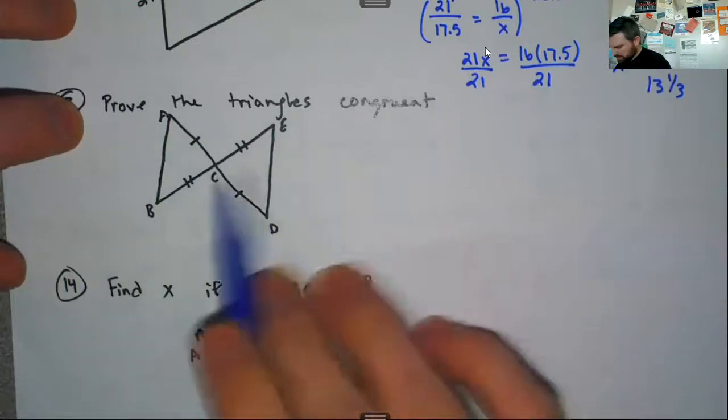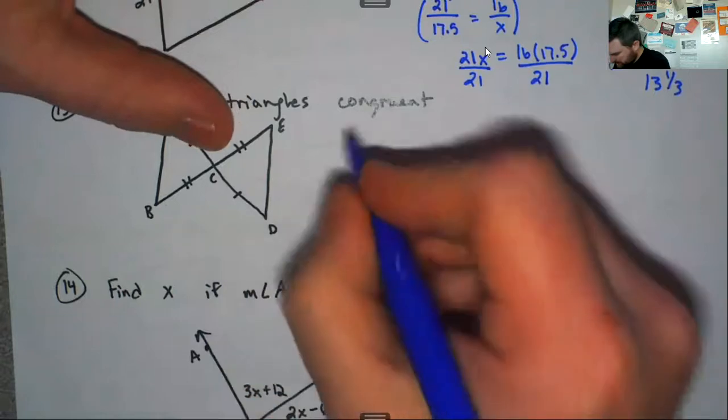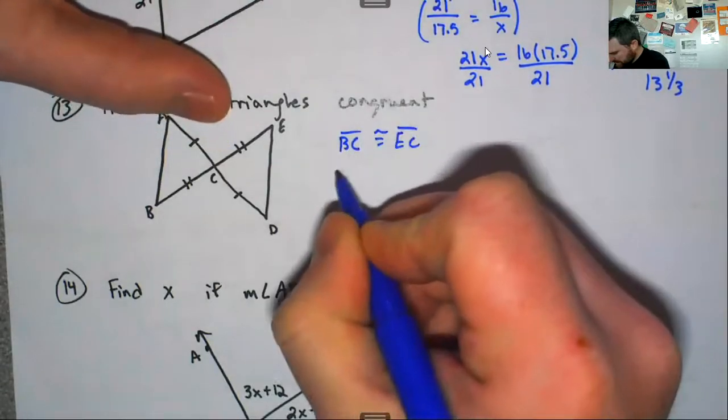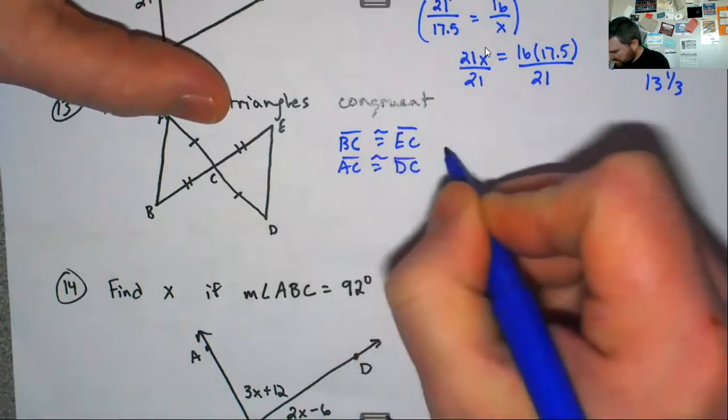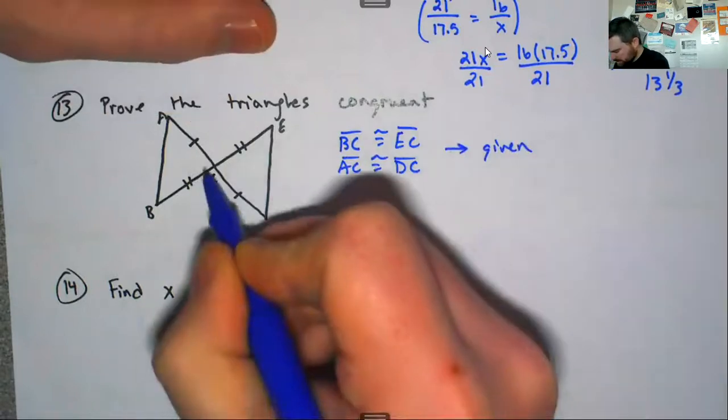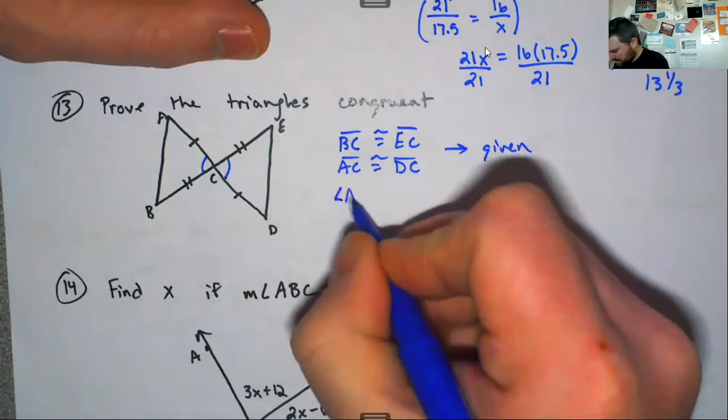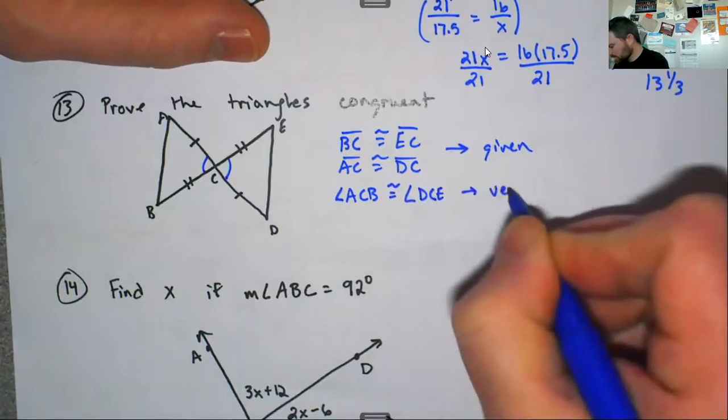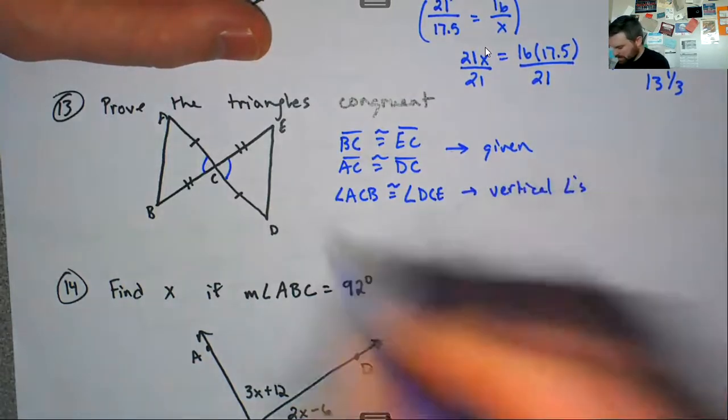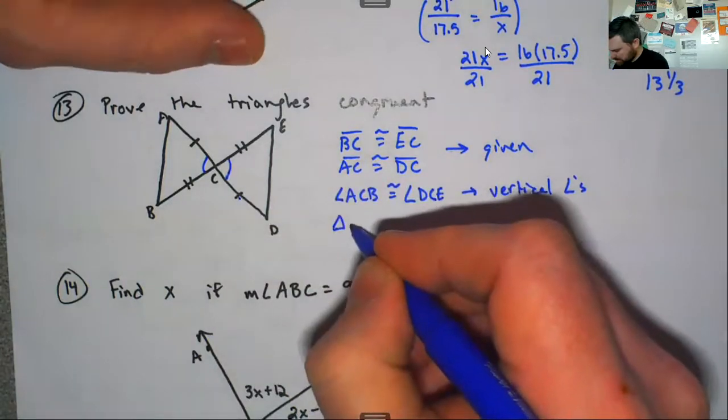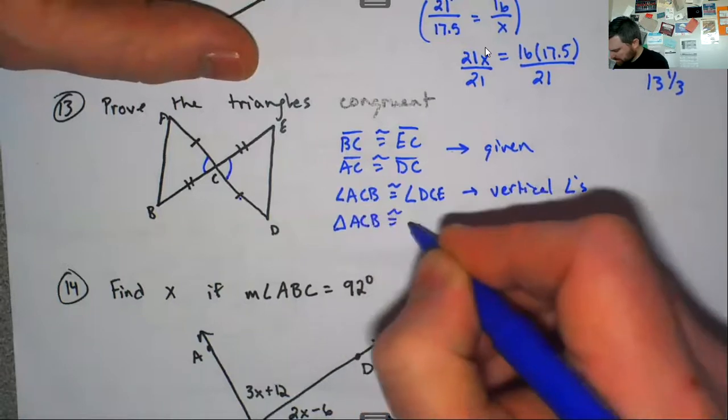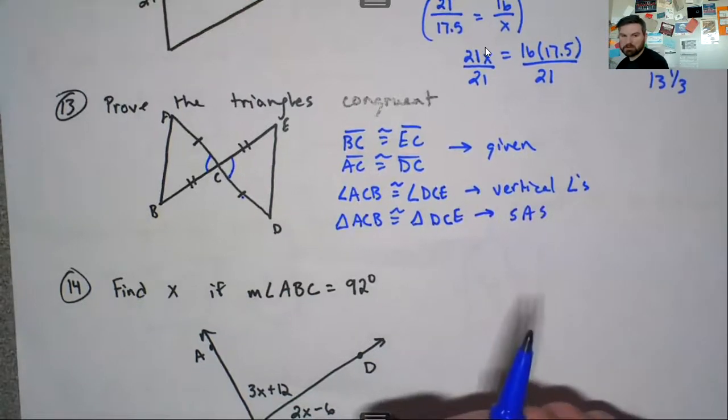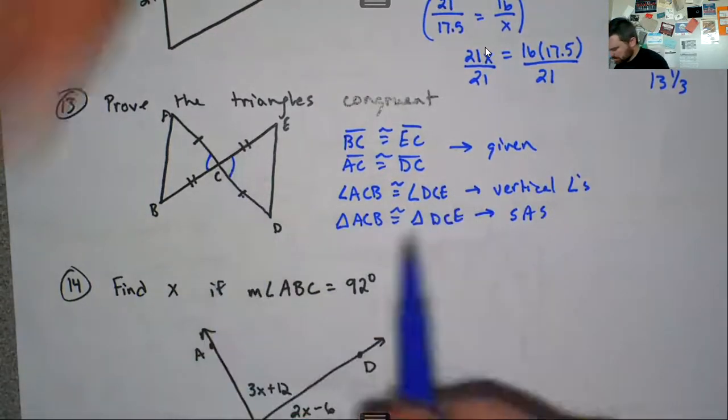Some old stuff here. Prove the triangles are congruent. So I know that BC is congruent to EC, and I know that AC is congruent to DC. All that's given. Here, these two angles are vertical. So I know that angle ACB is congruent to angle DCE, vertical. Now I have side angle side. So your triangles are congruent. So triangle ACB is congruent to triangle DCE, and that is side angle side. Make sure your order on here is correct.